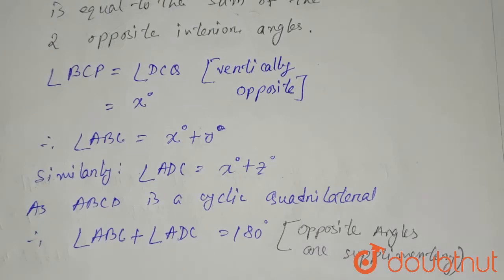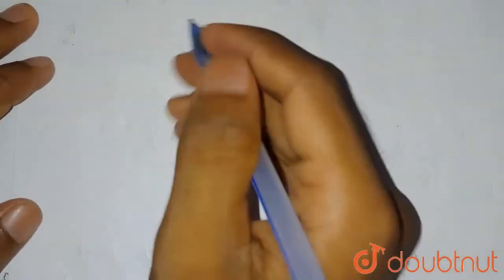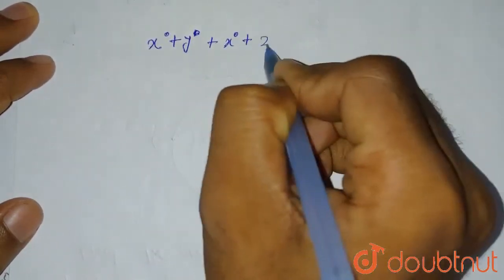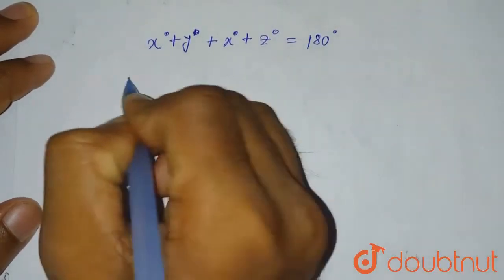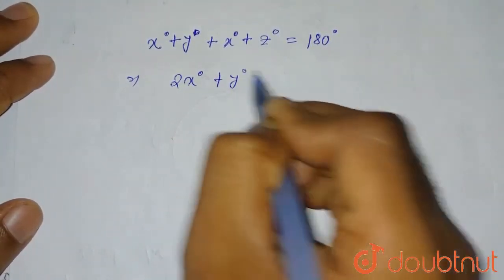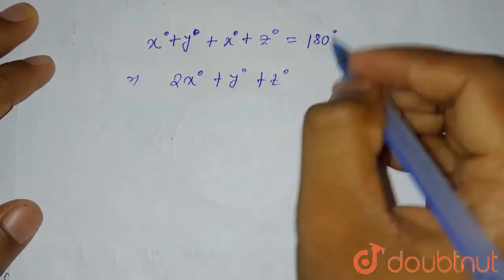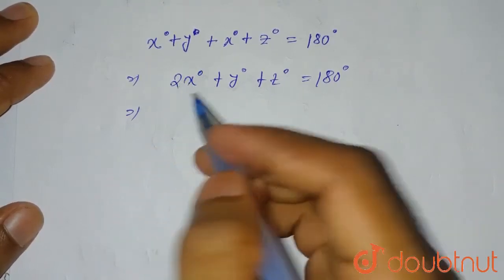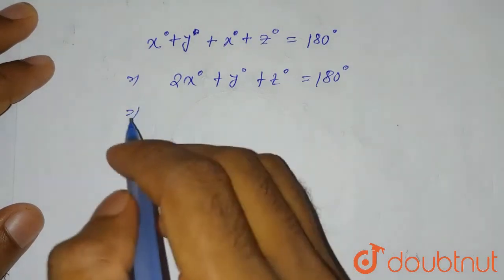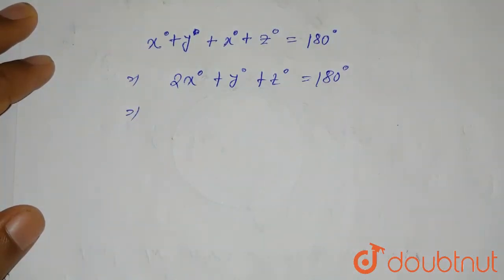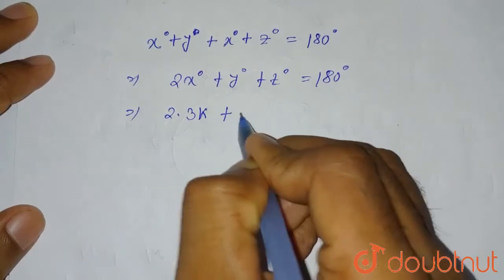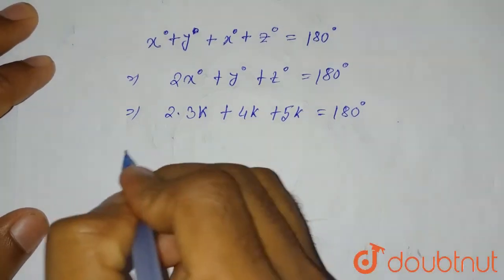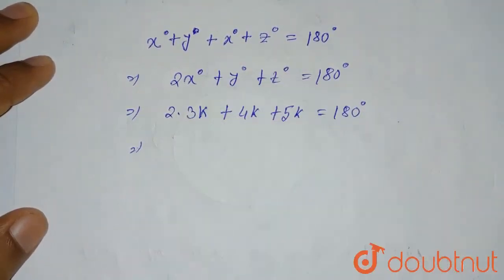Substituting the values: (x + y) + (x + z) = 180 degrees, which gives 2x + y + z = 180 degrees. Now substituting x = 3k, y = 4k, z = 5k: 2(3k) + 4k + 5k = 180 degrees, so 15k = 180 degrees.